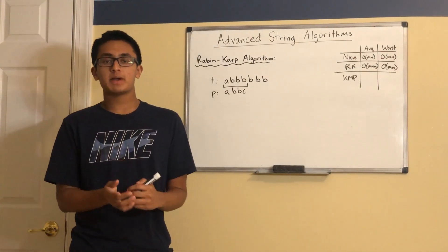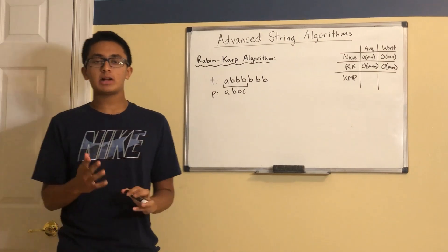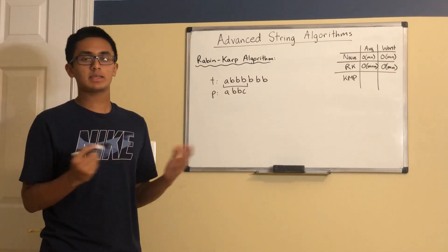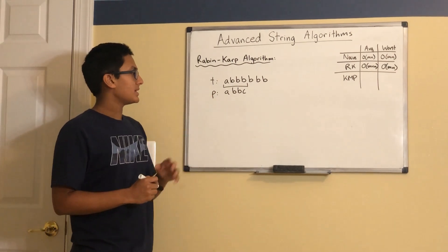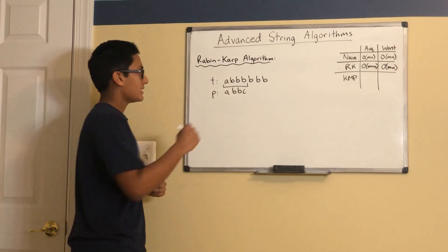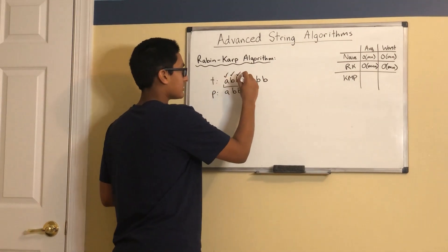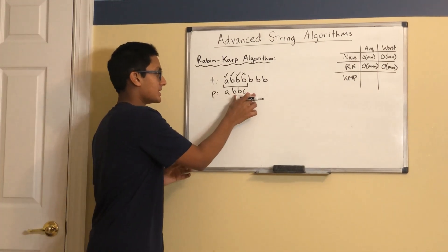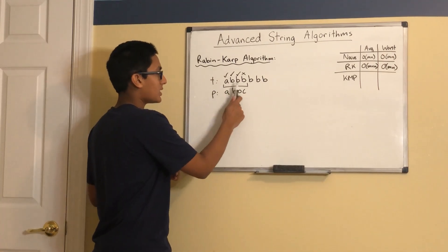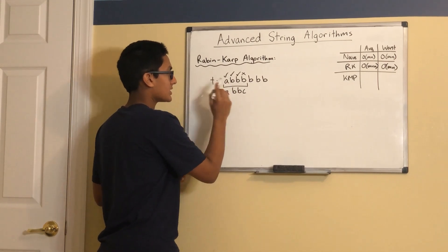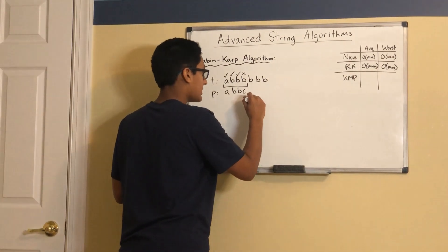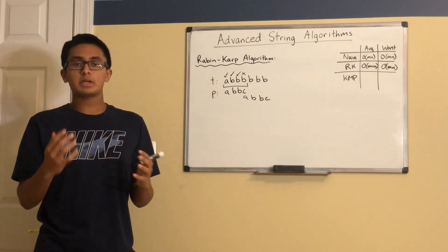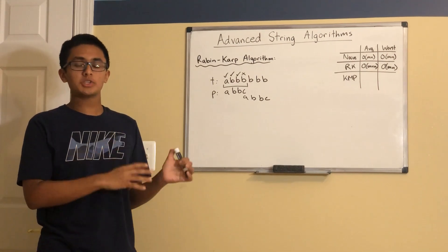The next algorithm we'll discuss for string matching is KMP, or Knuth-Morris-Pratt. This algorithm takes advantage of the fact that you don't have to check over every single position every time. Let's get some intuition for this. Take a pattern of ABBC and search through this text. The first character matches, the second matches, the third matches, but the fourth doesn't. Intelligently, we know that we don't have to search the next sliding window because we've already searched through some parts of the text and know these characters are not equal to A. So we should be able to jump ahead instead of just shifting by one.